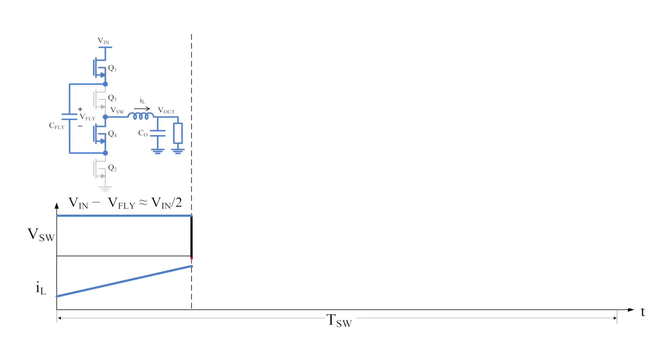Imagine a 12 volt input used to charge a 4 volt battery. In this case, the converter would operate by alternating the switch node between VIN over two and ground as shown here. The cycle consists of four stages. We start the cycle with Q1 and Q4 on, presenting VIN minus VFLY, in other words VIN over two, at the switch node. At the same time, the CFLY capacitor gets charged while the inductor gets energized because the output is lower than the switch node voltage.